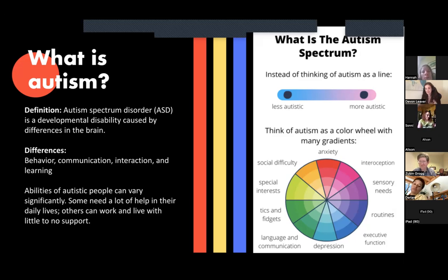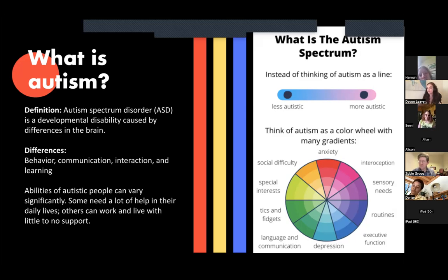You've met one autistic person because it affects everybody differently. Using myself as an example, I'm not so much affected on the language and communication side of things — I have very low support needs there. But I have high support needs when it comes to sensory input. I can't go to a concert without heavy duty ear protection. I can't wear wool because it's too itchy. I can't wear bracelets, tags on my clothing, or socks that constrict my ankles. It makes it a lot more difficult to go about my daily life.